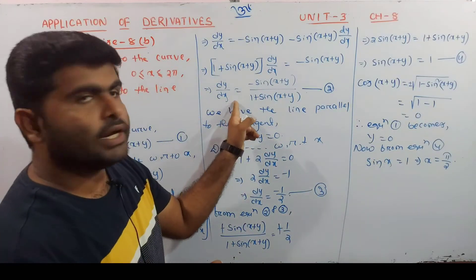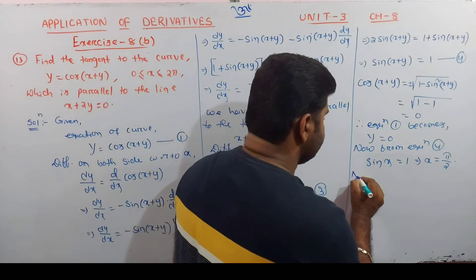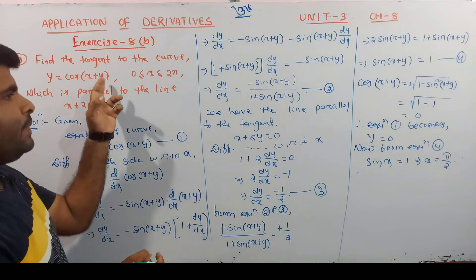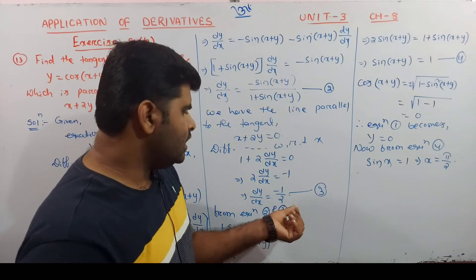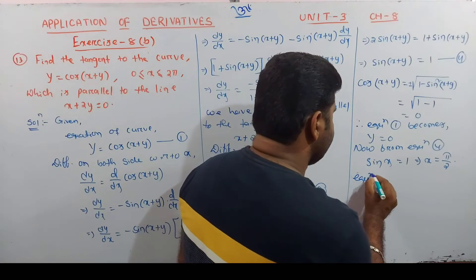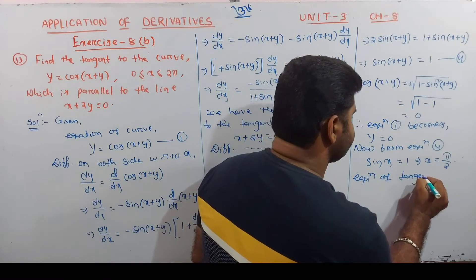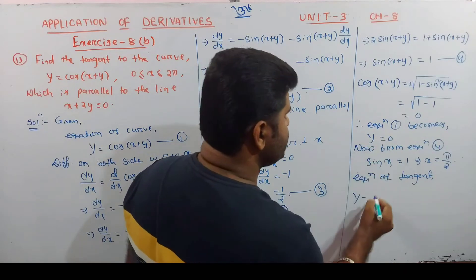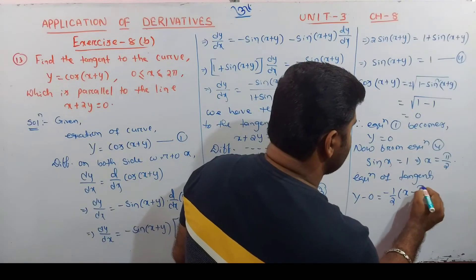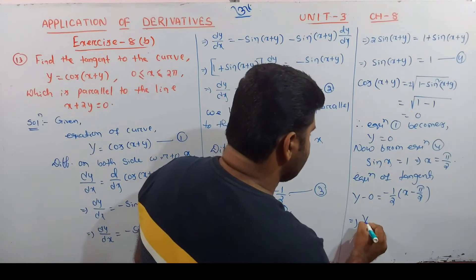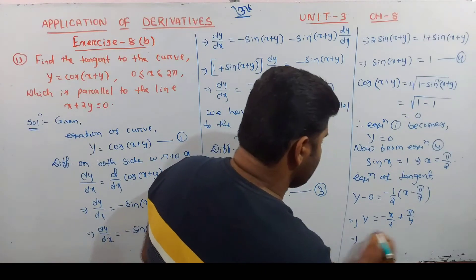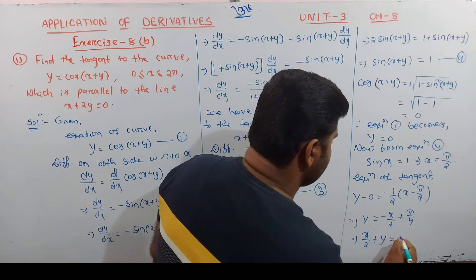Now we can find the slope at this point. The slope of the tangent is -1/2. Equation of tangent: y - 0 = -1/2 × (x - π/2). So y = -x/2 + π/4, or x/2 + y = π/4.